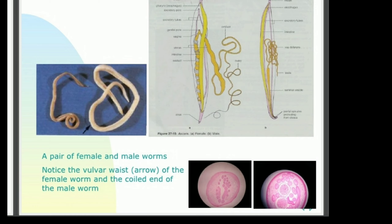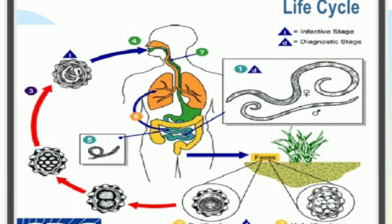In the next slide, we observe how the life cycle is carried from one carrier to another. First, you can see plants in the bottom left corner. From contaminated plants, the Ascaris worm passes through several stages and enters through our mouth. After entering the mouth, it transforms in our digestive tract.